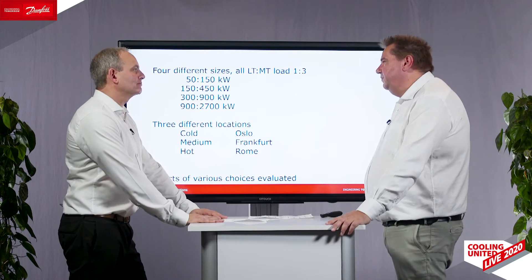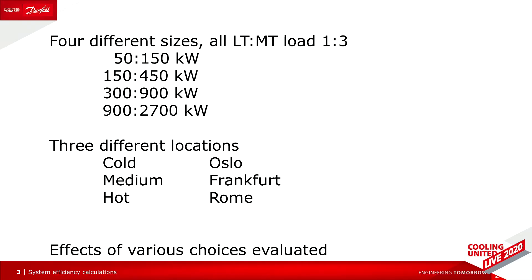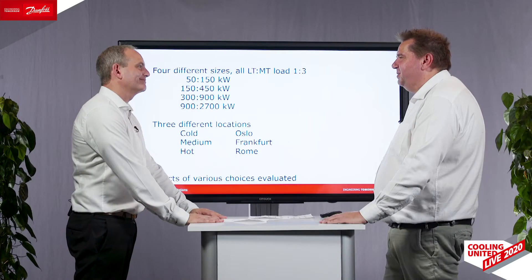But also an optimized version where we had basically all the bells and whistles that we could put into it to have the highest efficiency of the system. We also calculated in four different sizes, from relatively small — 50 kilowatts on the low temperature and 150 on the medium temperature — keeping that 3-to-1 ratio all the way up to the large system, which was 900 at low temperature and 2700 at medium temperature. We found no significant difference from the size of the system, so we skipped that in the last half.